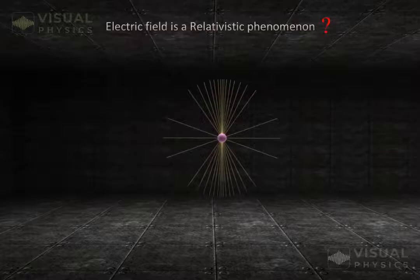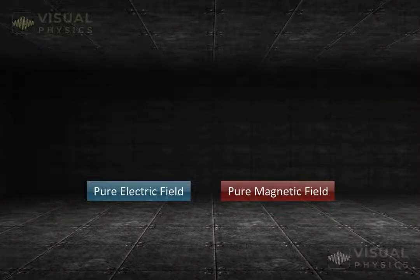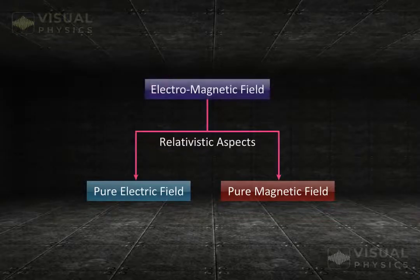So is electric field also a relativistic phenomena? Yes, it is. In fact, both electric and magnetic fields are relativistic aspects of an electromagnetic field.